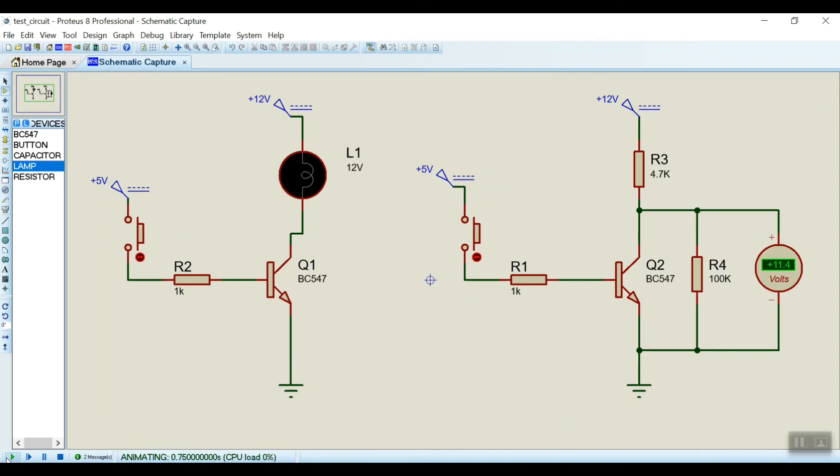So look at the left hand side circuit. This is the button which I'll press. See, the lamp is glowing. When I am releasing it, lamp is off. See, lamp is glowing, lamp is off.